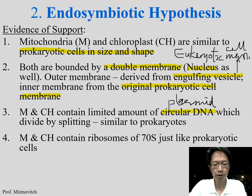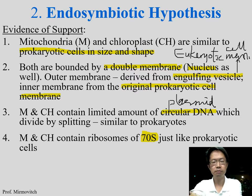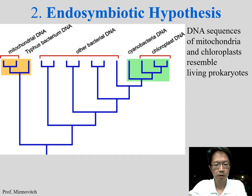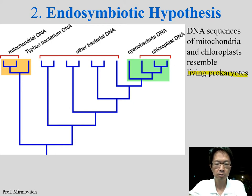Most importantly, the ribosomes in mitochondria and chloroplasts are 70S — which is the prokaryotic ribosome size. Last but not least, the DNA sequences of mitochondria and chloroplasts resemble those of living prokaryotes: chloroplast DNA is very similar to cyanobacteria DNA.